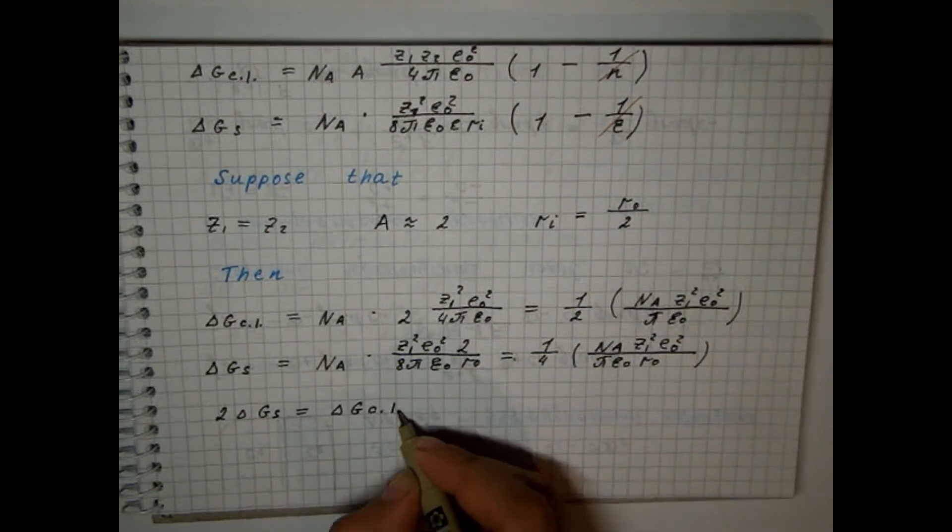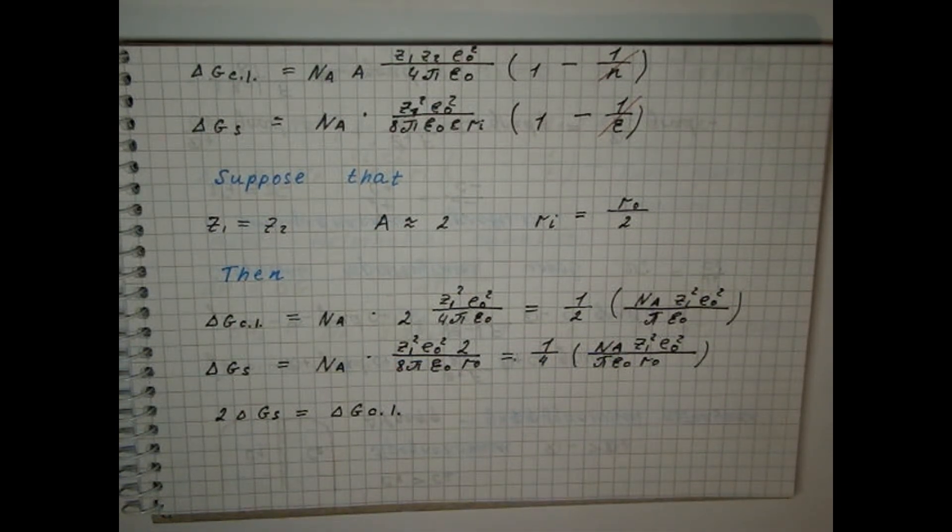The solvation energy of two ions, the cation and the anion, just compensates for the energy of destruction of the crystal lattice.